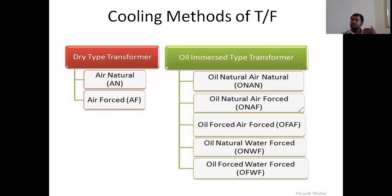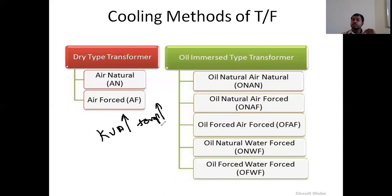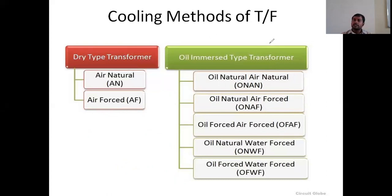As the KVA capacity of the transformer increases, temperature production increases, so we need to use different methods to reduce the temperature of the oil. That is why these classifications exist. The next method is Oil Forced, Air Forced — OFAF — where we need to forcibly send oil from tank to radiators using a pump.